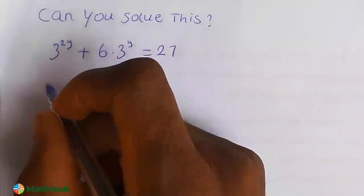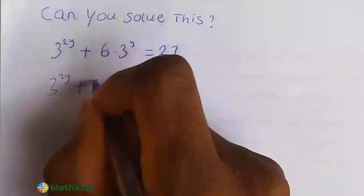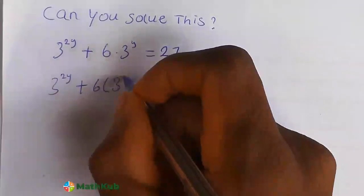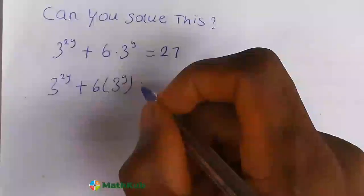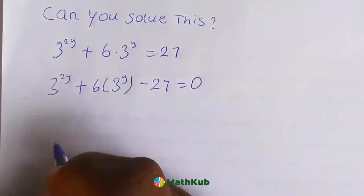You rearrange this, this is 3 to the power of 2y plus 6. Take this to this side, this is minus 27 equal to 0. You can say let...